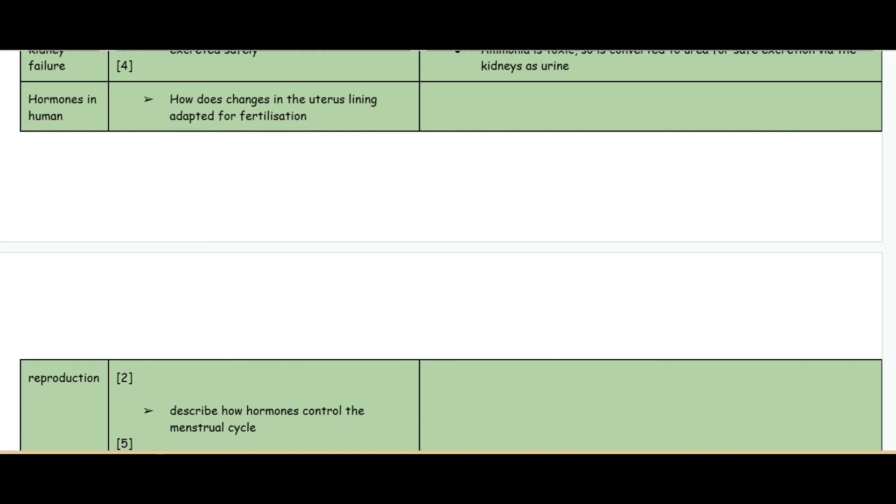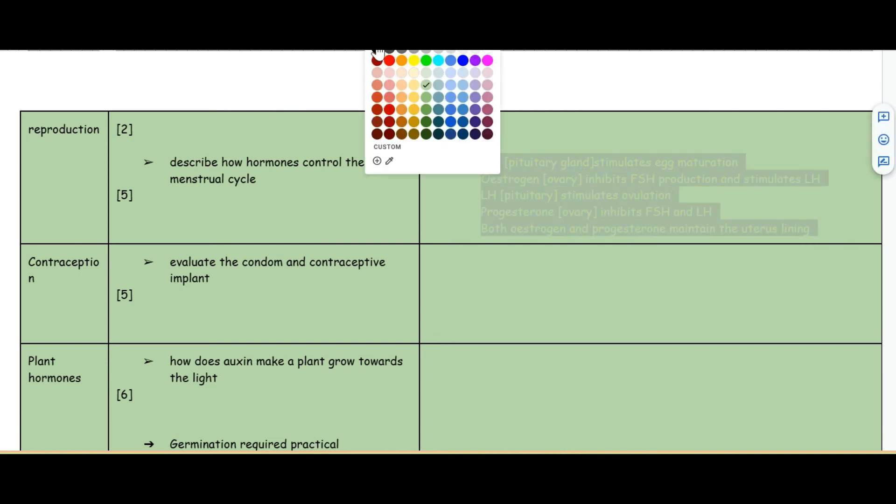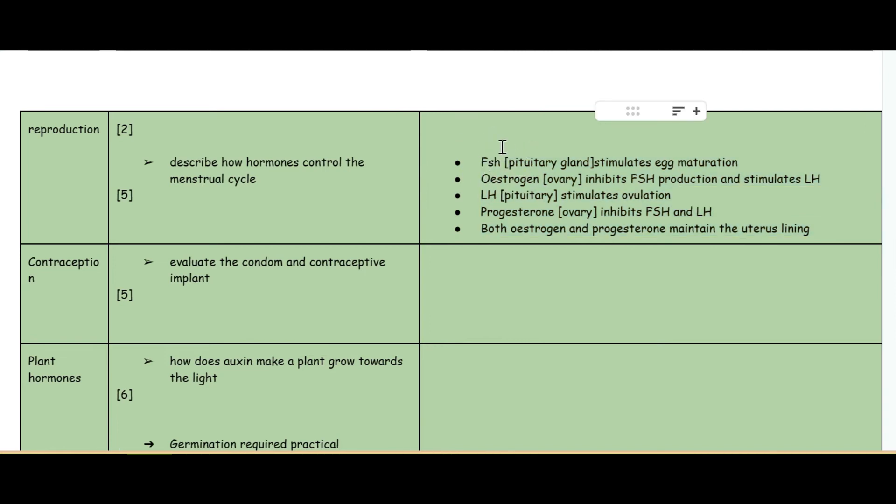The next topic: hormones in human reproduction. How does changes in the uterus lining adapt for fertilization? The uterus lining increases its thickness during that part of the cycle in order to increase the blood vessels that are providing nutrients for the possible baby. Describe how hormones control the menstrual cycle. This is quite a hefty question. Firstly, you've got FSH - easy to remember, first is FSH. This is released by the pituitary gland and it stimulates egg maturation.